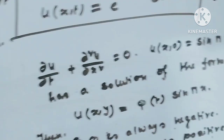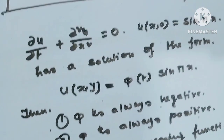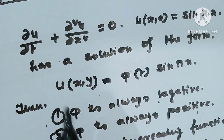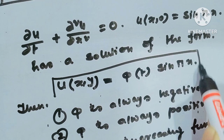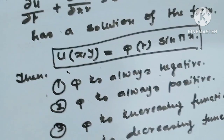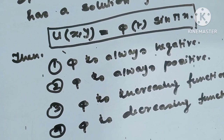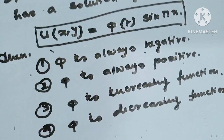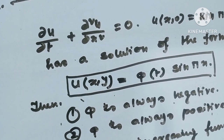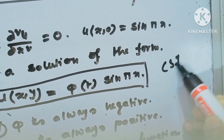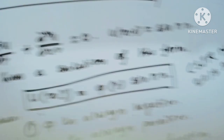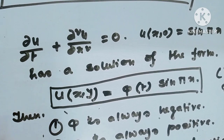Next, a similar type of question. Second equation: del u / del t = del²u / del x², with condition u(x,0) = sin(πx). This has a solution with the form u(x,t) = φ(t) * sin(πx). Options: (1) φ is always negative, (2) φ is always positive, (3) φ is an increasing function, (4) φ is a decreasing function. This question appeared in CSE NET 2013 December exam. Just apply the shortcut here.